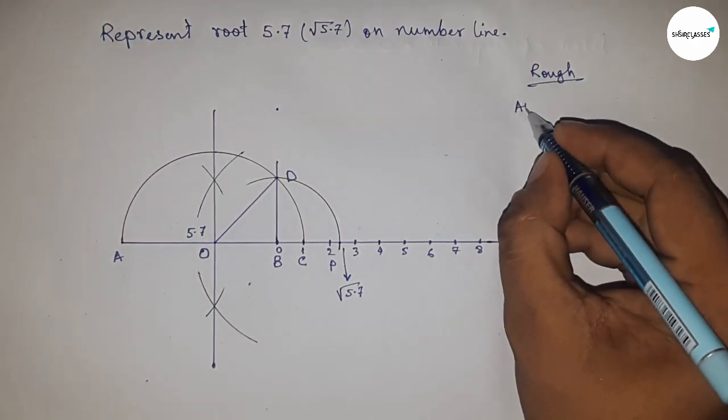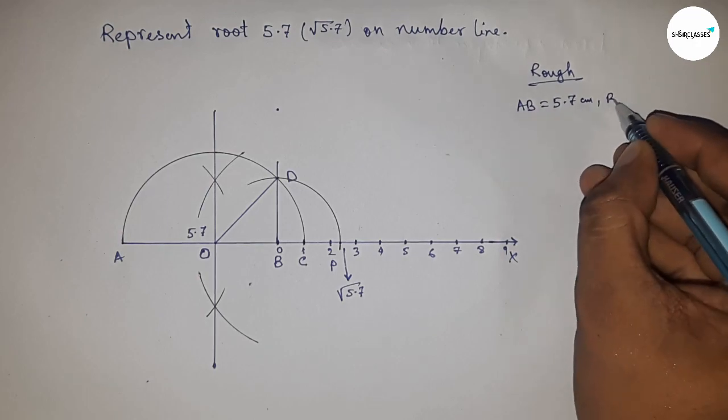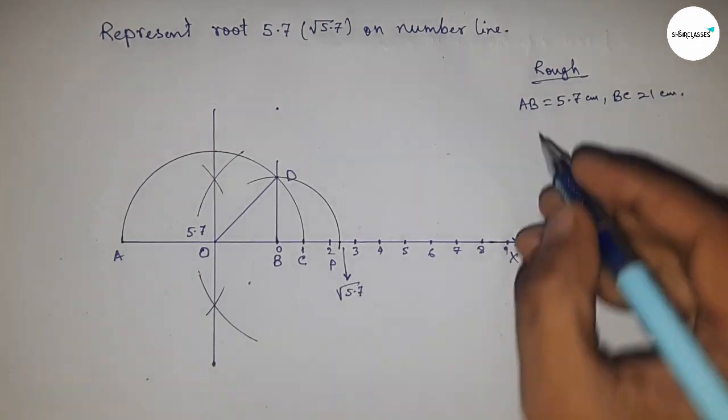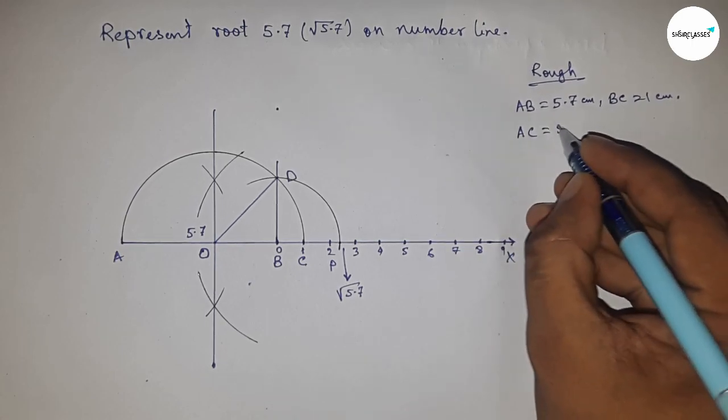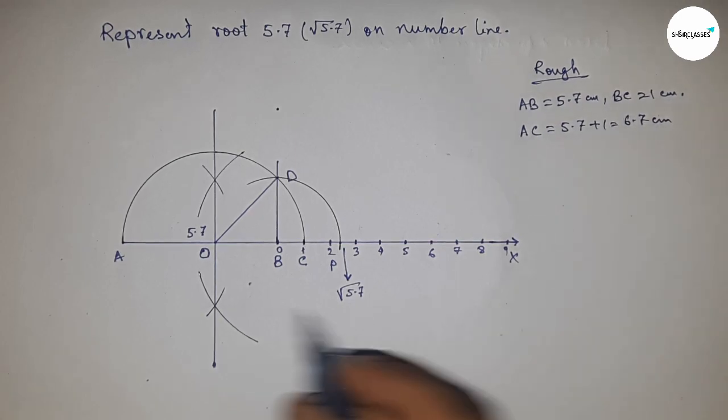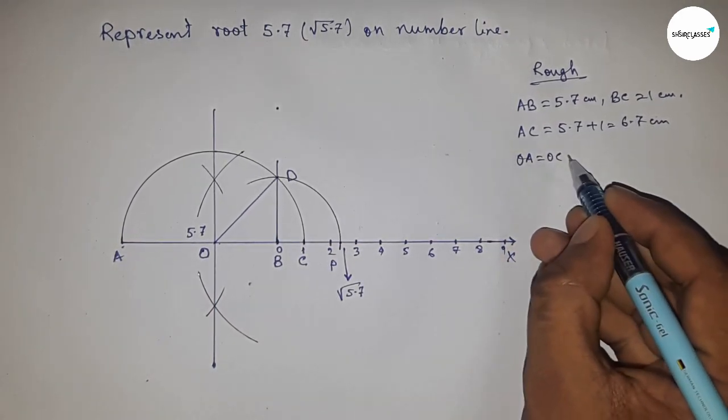Given: AB equals 5.7 centimeters and BC equals 1 centimeter. So AC equals 5.7 plus 1, which is 6.7 centimeters. Now, the radius OA, OC, and OD equals 6.7 divided by 2 centimeters.